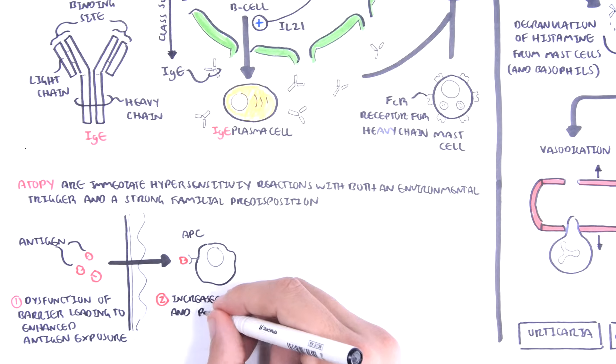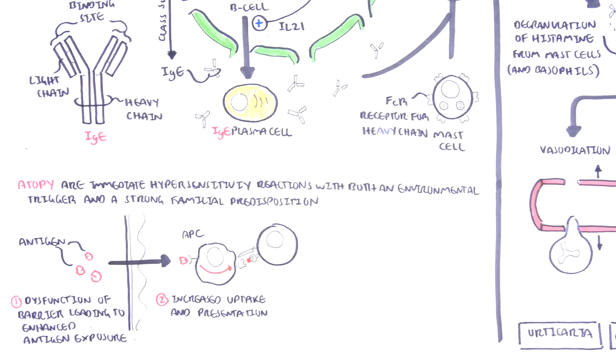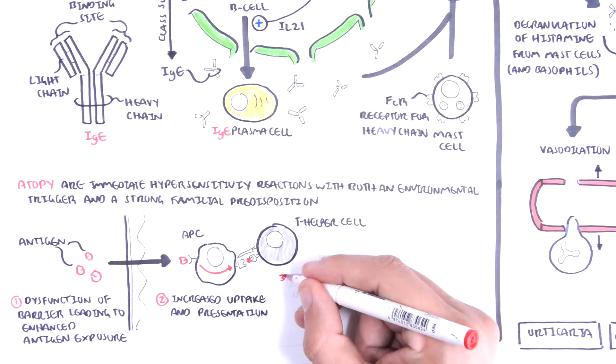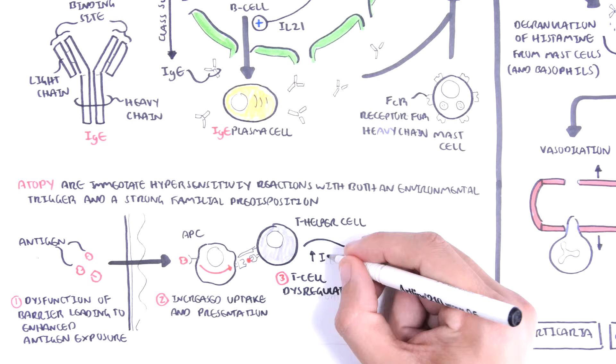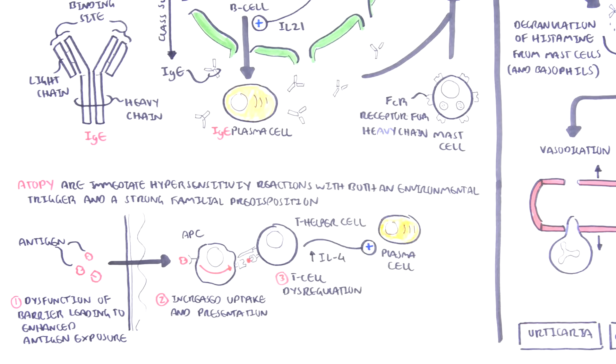Two, there can be increased uptake and presentation of external antigen, which would sensitize the immune response or immune system. Three, there could be dysregulation of the T cells. For example, people can have increased production of interleukin-4, which is a cytokine responsible for class switching to immunoglobulin E, IgE.